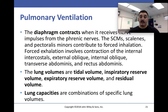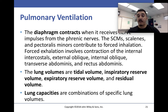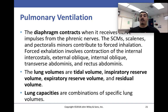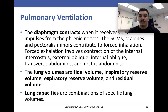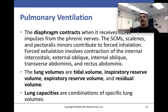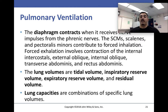To breathe, we contract and relax certain muscles to increase lung volume and create pressure changes. The diaphragm contracts, receiving nerve impulses from the phrenic nerves. The sternocleidomastoid muscles, scalenes, and pectoralis minors contribute to forced inhalation. For forced exhalation, the abdominal muscles — external oblique, internal oblique, and associated muscles — contract to let air out. Some muscles help take air in and others help let air out.